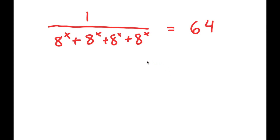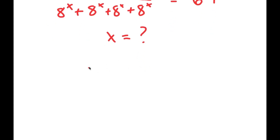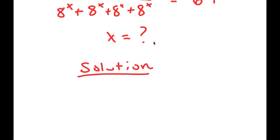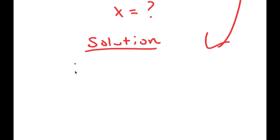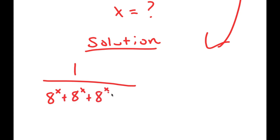Alright, so in this problem, I have 1 over 8 to the power of x, plus 8 to the power of x, plus 8 to the power of x, plus 8 to the power of x, is equal to 64. So I obviously want to find the value of x here. For my solution, I'm going to first start by rewriting my equation.